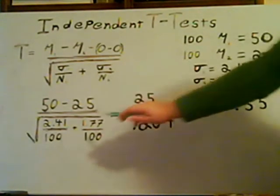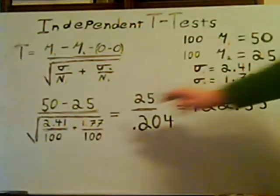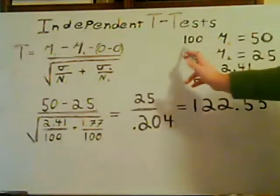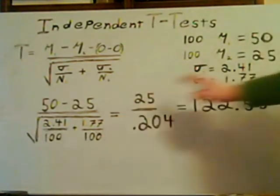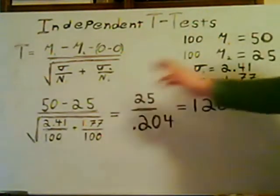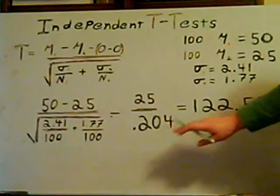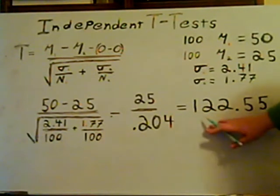and square root of 2.41, which was the standard deviation of A, divided by 100, which was the number for A, plus 1.77, which was the standard deviation of B, divided by 100, which was the number for B. And when you do all that, you should get a t-score of 122.55.